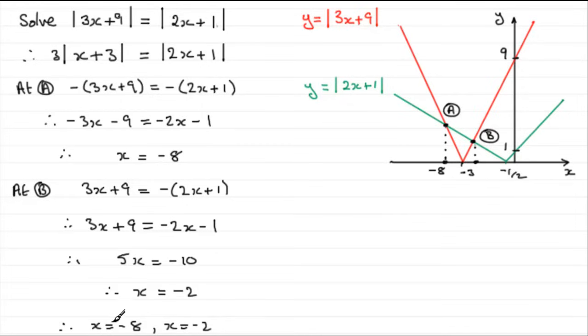So the solutions then are going to be x equals minus 8 and x equals minus 2. And you can see that they work. Let's just check them out. Look, when x is minus 8, 3 times minus 8 is going to be minus 24, plus another 9 is going to be minus 15. And minus 15, if you mod it, is going to be plus 15. And hopefully we get plus 15 out of this one. 2 times minus 8 is minus 16, add 1 is minus 15. Mod it, you get 15. I'll leave you to check out the minus 2. But basically, there are answers at the intersections of these two graphs.